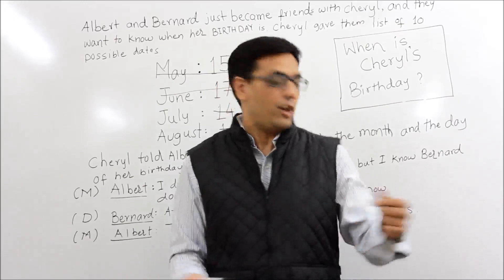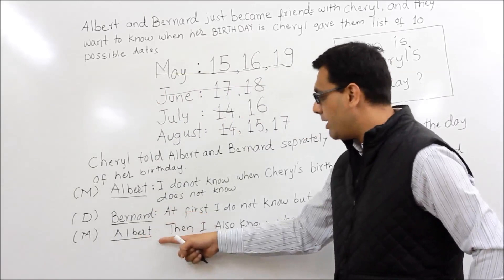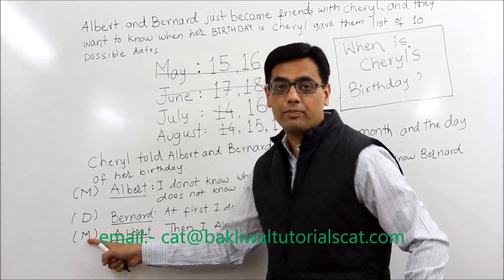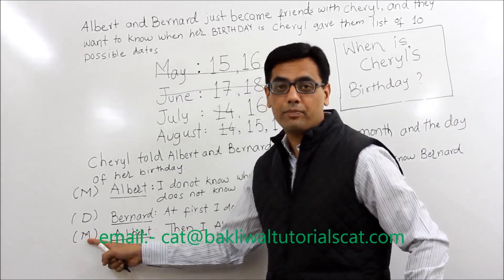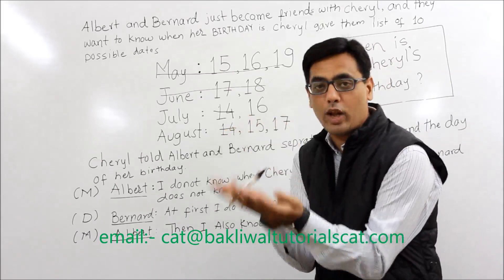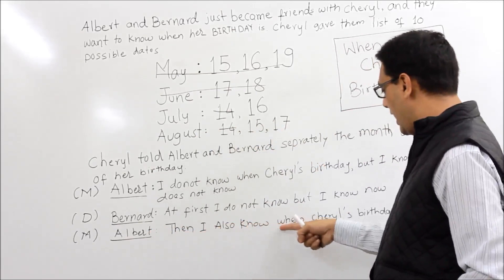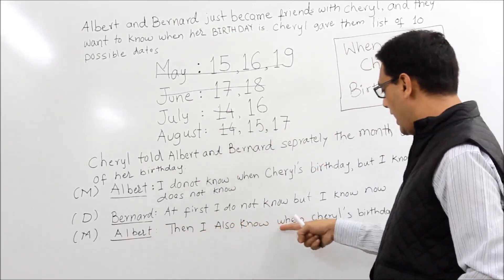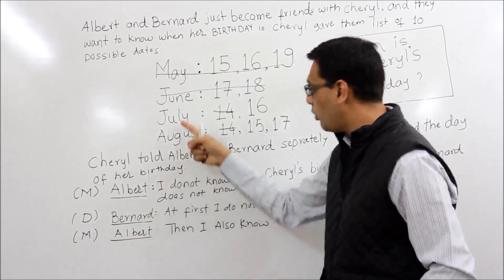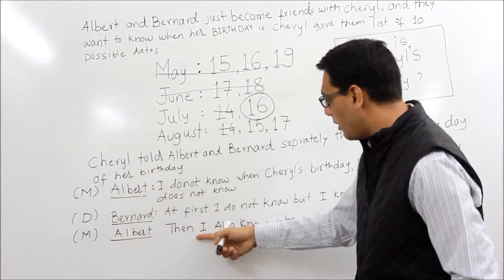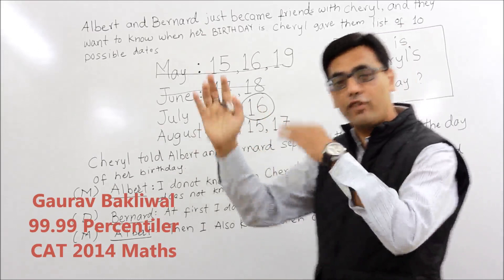Now the third line is very important. After hearing Bernard, Albert says: 'Then I also know when Cheryl's birthday is.' Albert knows the month. If Albert had July in his head, then the answer is 16th July — only one option. If Albert had August in his head, then the answer would be either 15th August or 17th August, and he could not be confident. The fact that Albert says 'I also know for sure' clearly means Albert was having July. There is only one combination available in July, so the answer is 16th July.